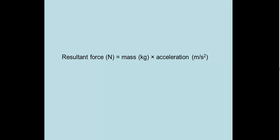The resultant force in newtons is given by the mass in kilograms multiplied by the acceleration in meters per second squared. We can write this as F equals ma.